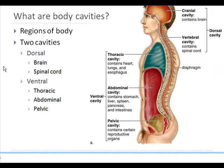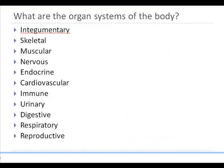Within each of the cavities, you can see the different organs that are present. For example, in the abdominal cavity, you can see the stomach, liver, spleen, pancreas, and intestines — these are all different organs. Similarly, in the dorsal cavity, you have the brain and the spinal cord. So this introduces us to the body cavities.